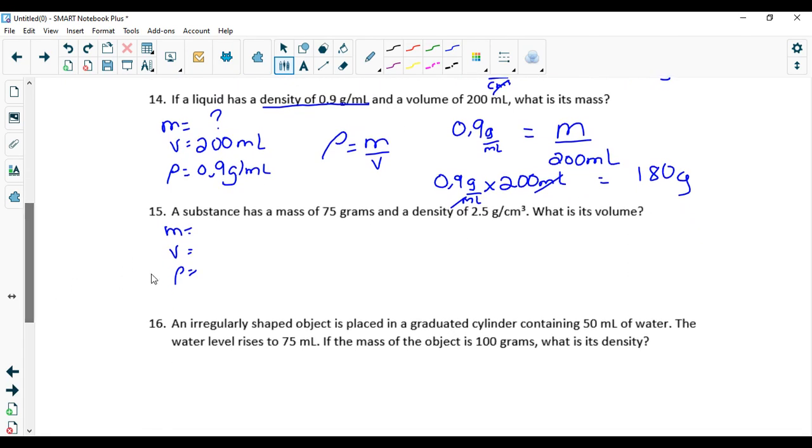Great. A substance has a mass of 75 grams and the density 2.5 grams per centimeter cube. What is the volume? Question mark. Write your formula.